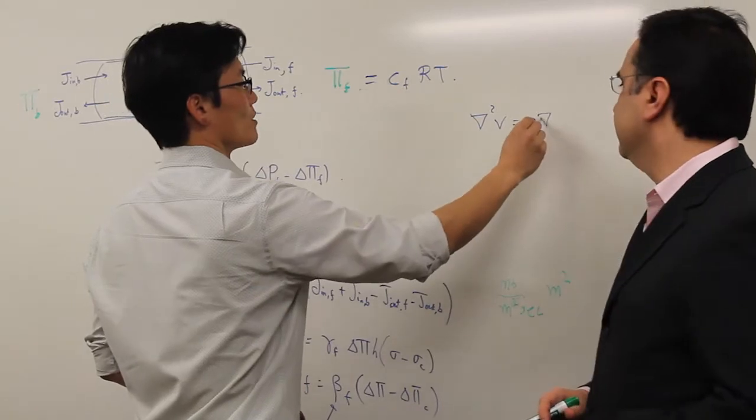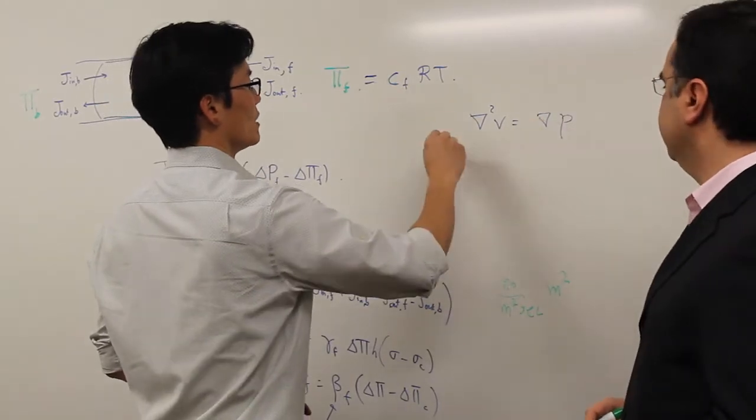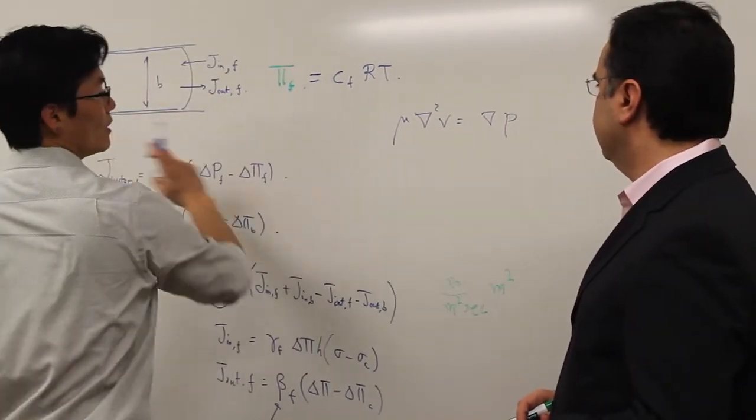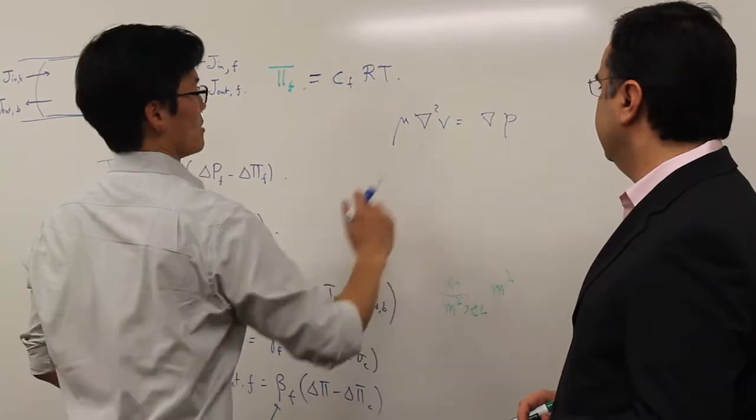We call this mechanism the osmotic engine model. The mechanism is simple enough that we can write down some mathematics to describe the cell movement. In fact, it's possible to compute the cell migration speed from a simple set of equations. From the theoretical work, it became very clear that external solute concentration in the medium surrounding the cell is an important variable for determining the cell migration speed.